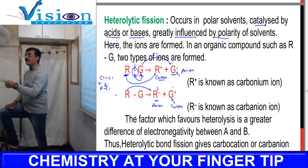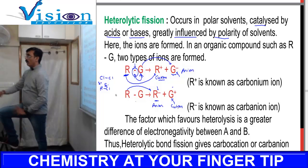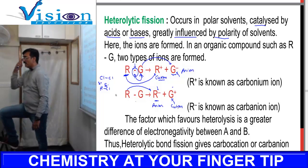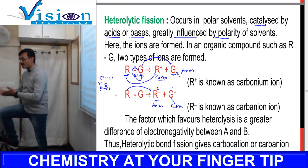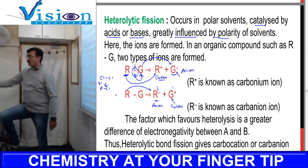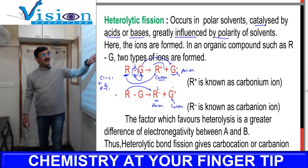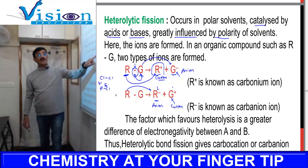In heterolytic fission, the electrons are not equally shared — one atom takes both electrons. If the result is a cation, that means there is a positive charge on the carbon atom. This type of cation on carbon is called a carbocation.